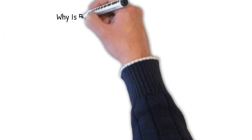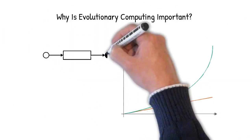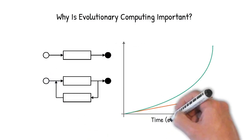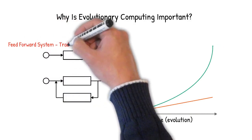Why is evolutionary computing so important? Let's start by looking at traditional programs designed to achieve desired outcomes, that is value. These are based on feed-forward systems, which typically produce linear results.